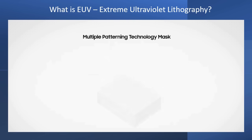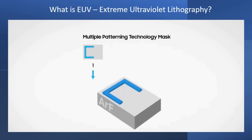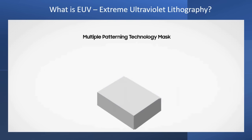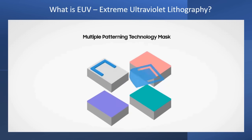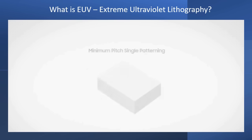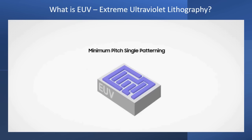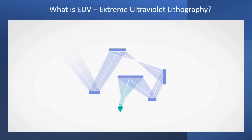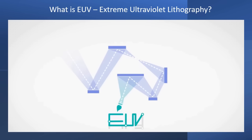EUV technology makes it possible to replace or reduce the use of MPT, since it can pattern fine features with a single mask and single photolithography process. EUV reduces cost through the reduction of masks, process steps, and processing time. With fewer process steps, EUV also reduces cost by improving yield. As semiconductor geometries continue to grow smaller, the adoption of EUV lithography technology has become extremely important, enabling scaling down of intricate patterns on wafers for next generation applications.